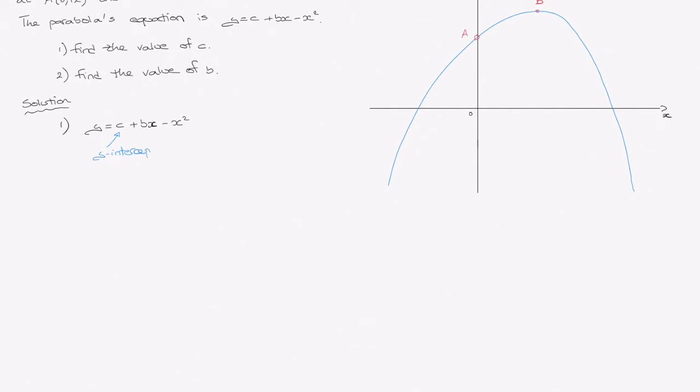And we can tell that that's the y-intercept because it's the only term in this curve's equation which doesn't have an x. So we can actually just find c very quickly and notice that c must be the y-coordinate of A.